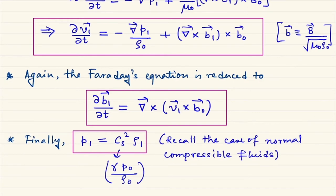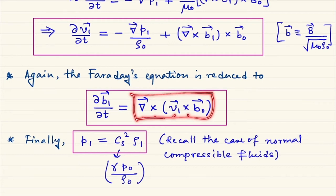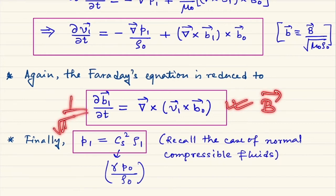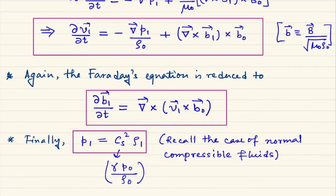The third equation is Faraday's induction equation: ∂b₁/∂t = curl(v × B). Since v₀ = 0, only the first-order term survives: there is no term like curl(v₀ × b₁). Writing in normalized units by dividing by √(μ₀ρ₀), the linearized Faraday equation becomes ∂b₁/∂t = curl(v₁ × b₀).